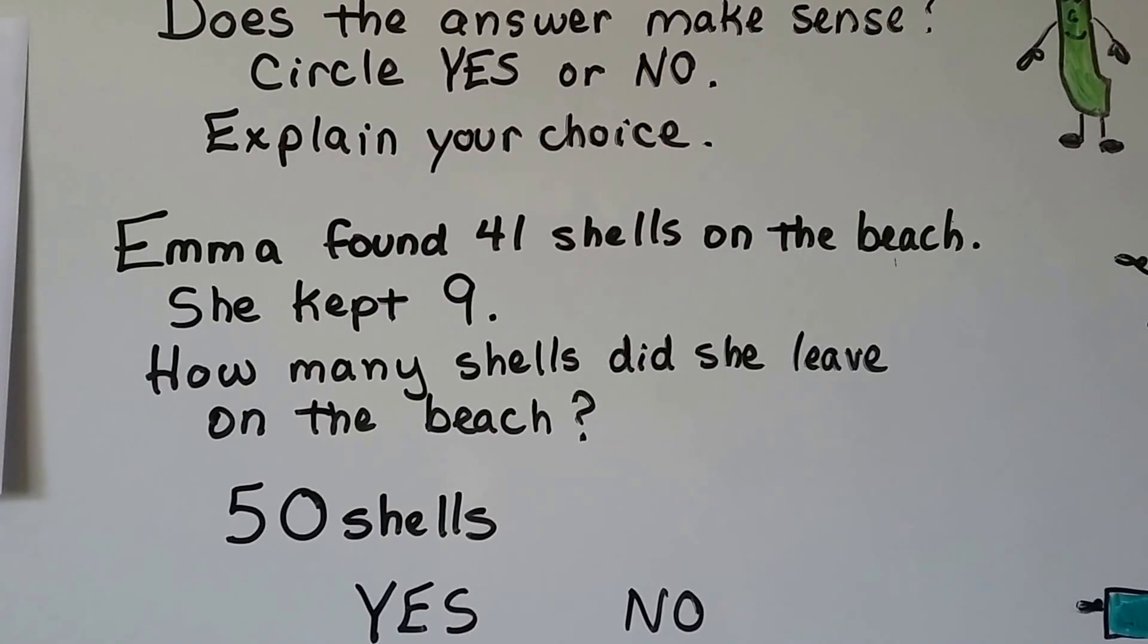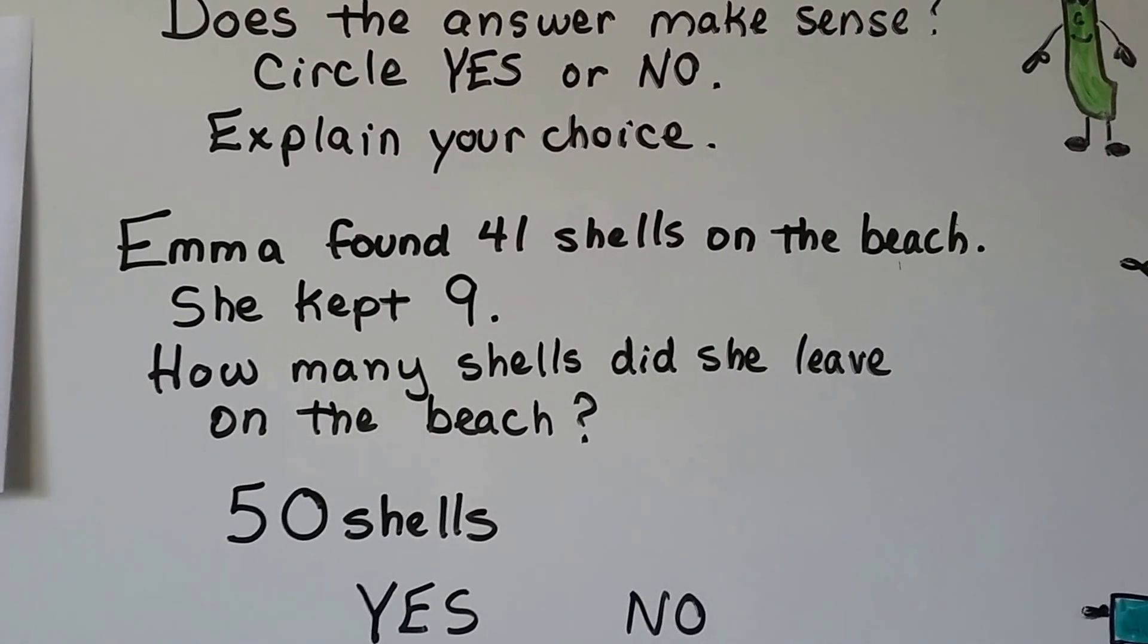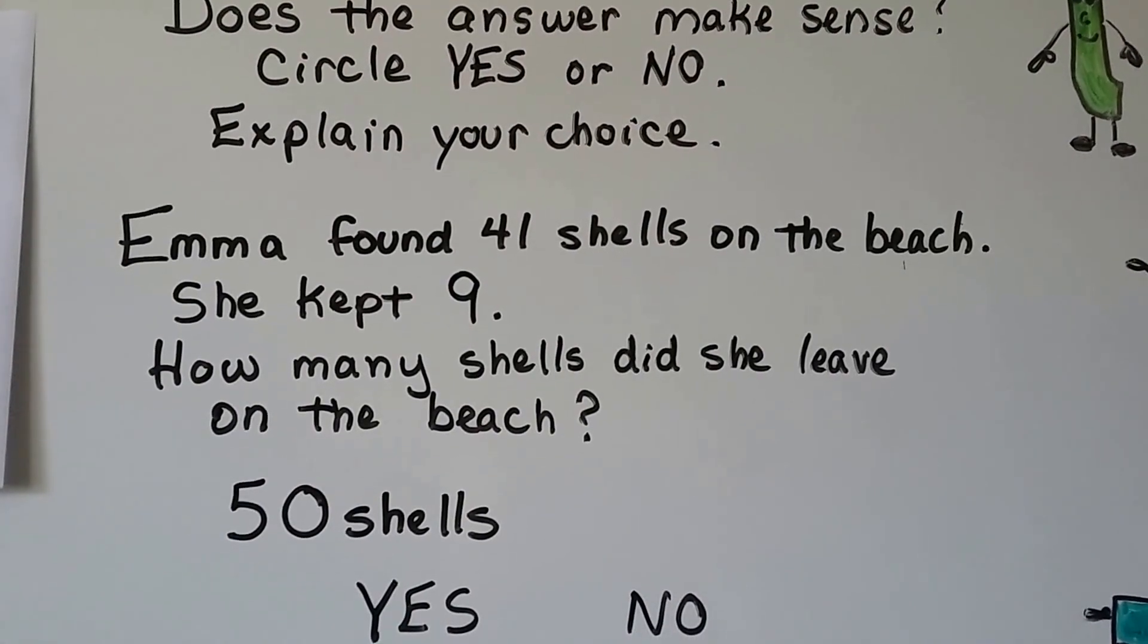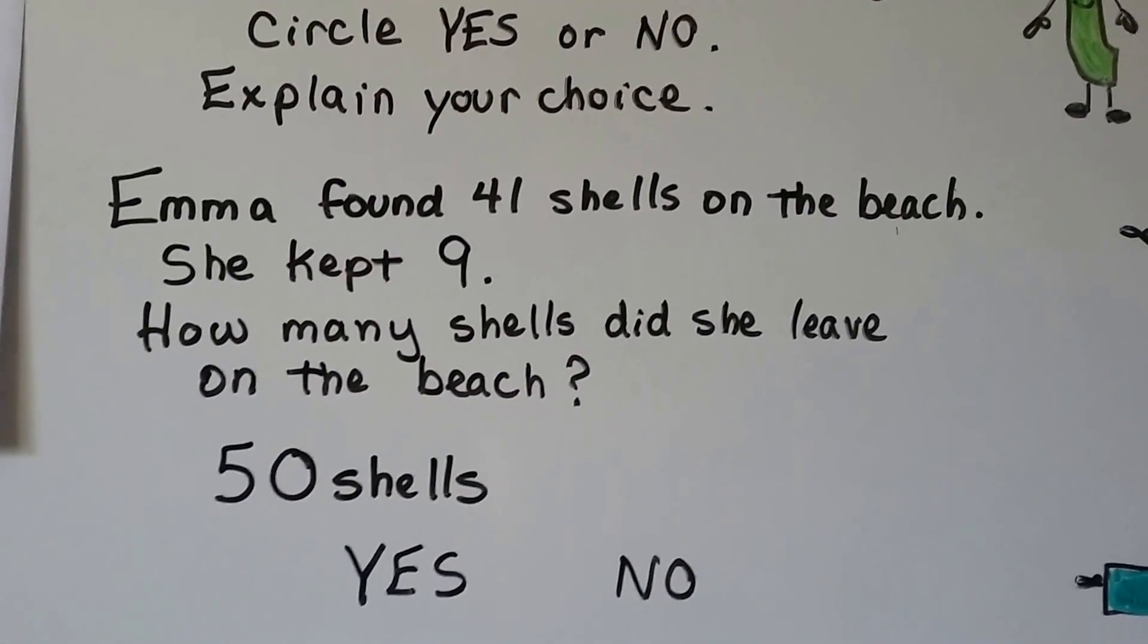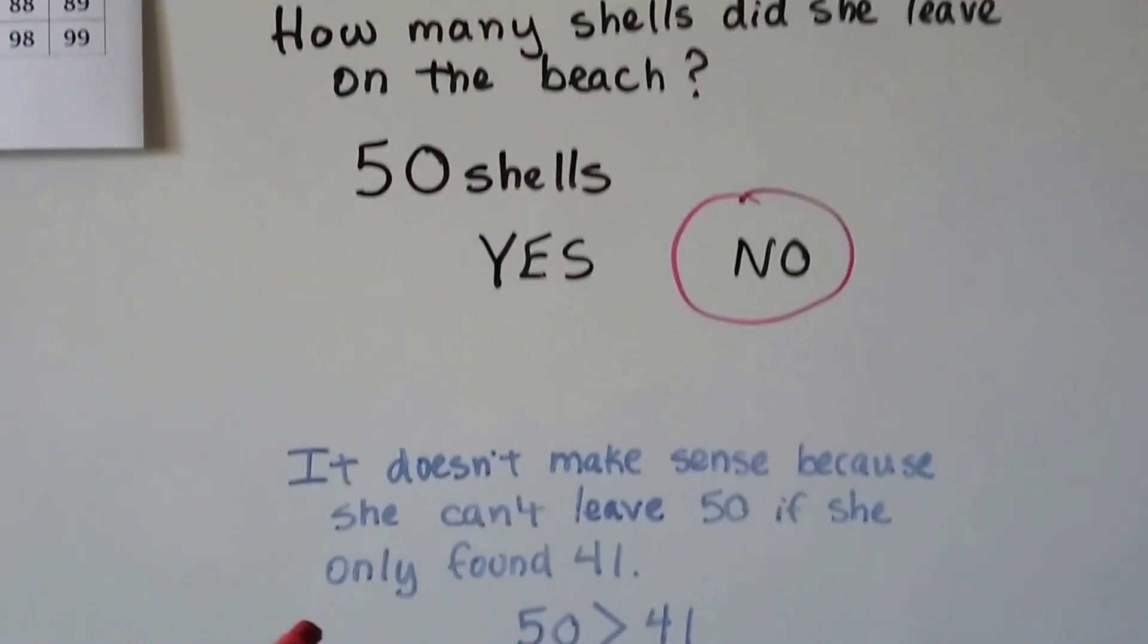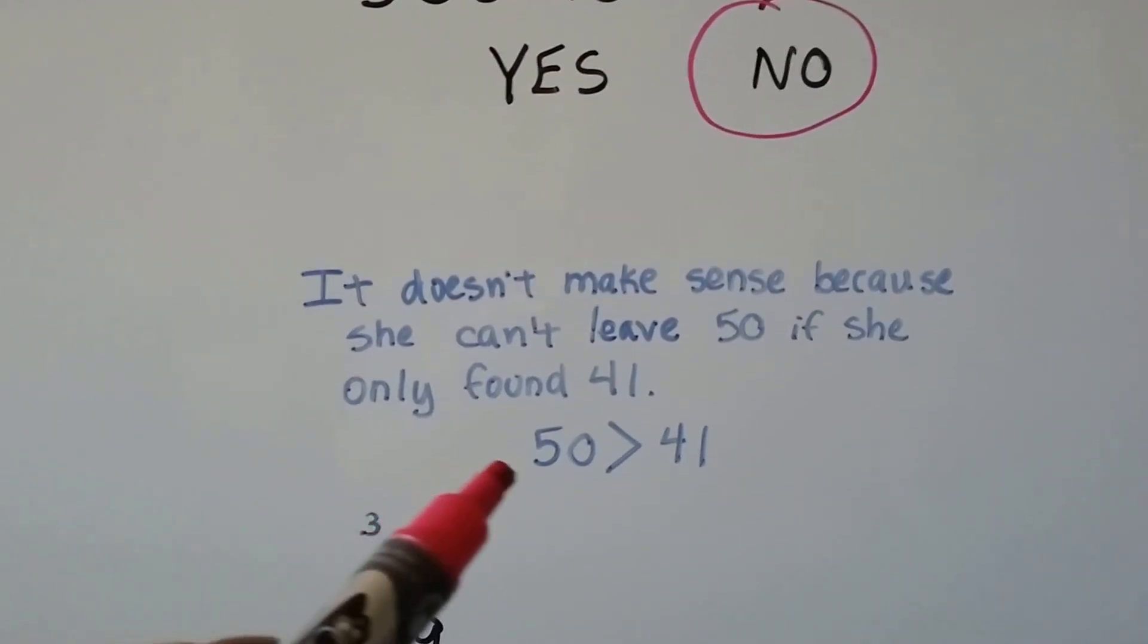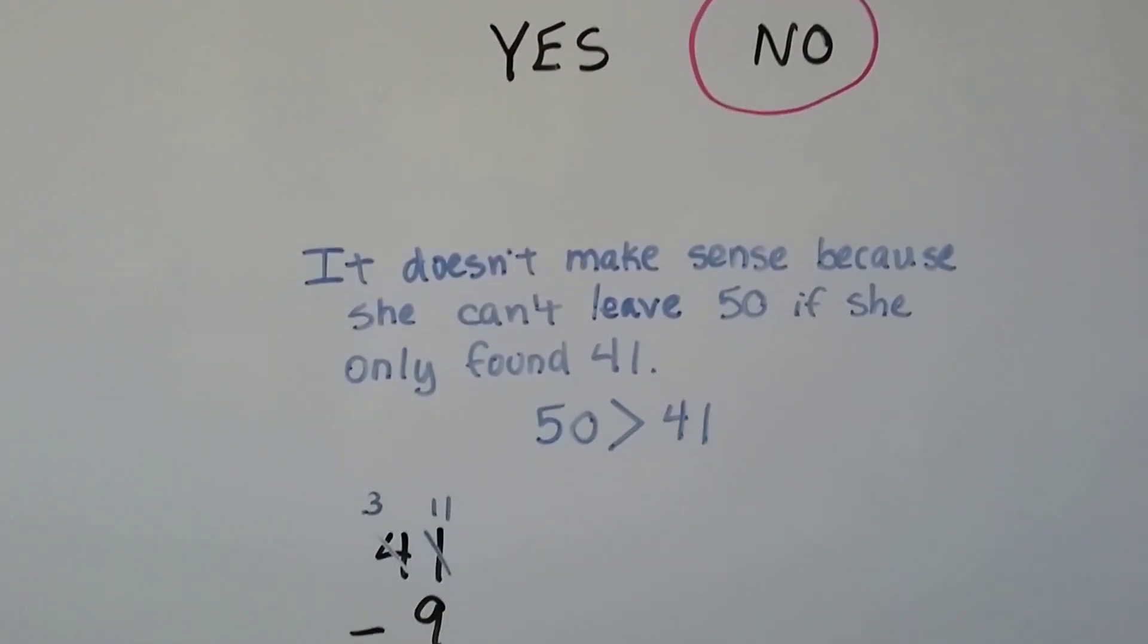Think about this. She found 41 shells on the beach. She kept nine. Could she have left 50 on the beach? Well, no. If you said no, you're right. Because that doesn't make sense. It doesn't make sense because she can't leave 50 if she only found 41. 50 is greater than 41.